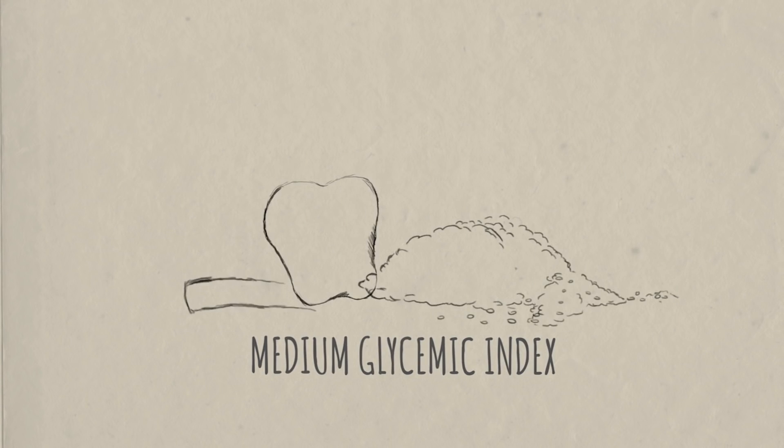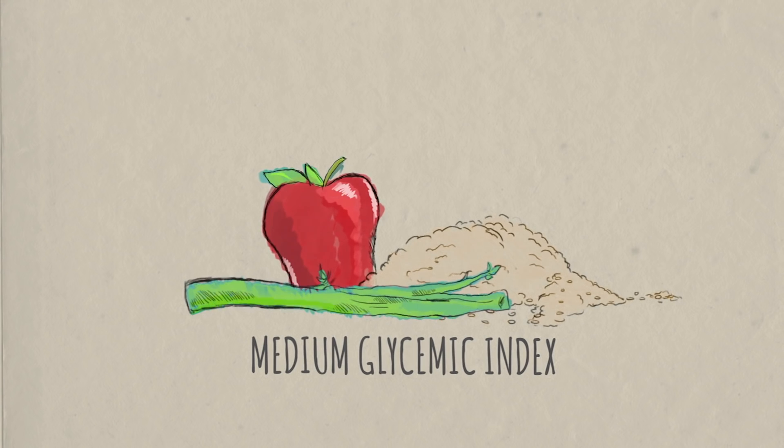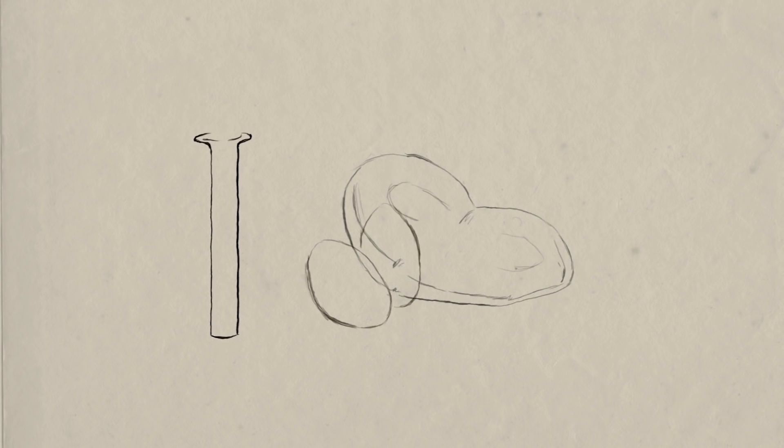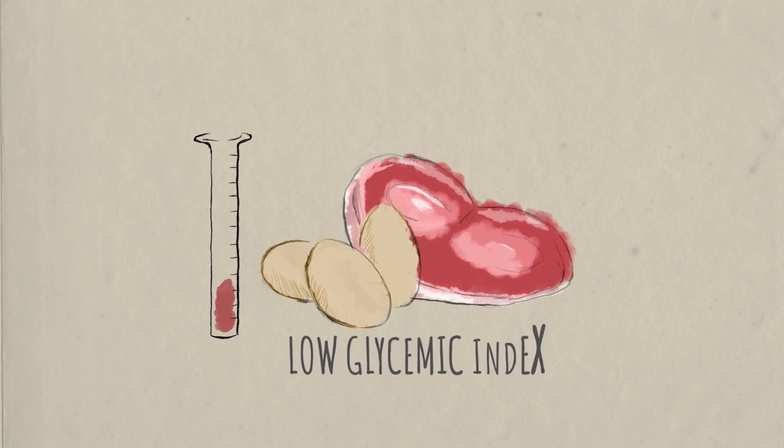But when you eat foods high in fiber, like vegetables, fruits, and whole grains, those indigestible beta bonds slow the release of glucose into the blood. Those foods have a lower glycemic index, and foods like eggs, cheese, and meats have the lowest glycemic index.